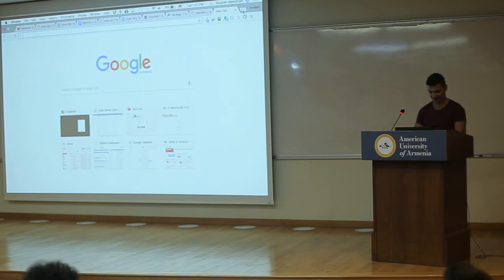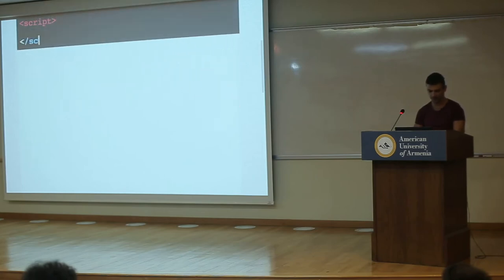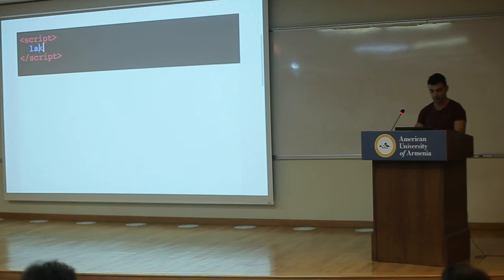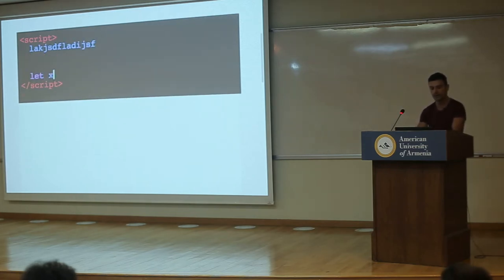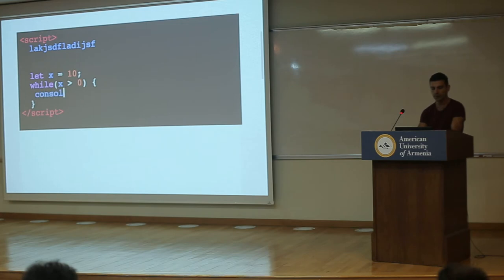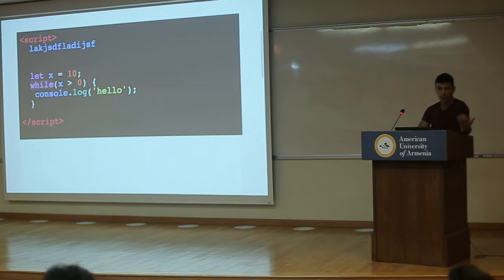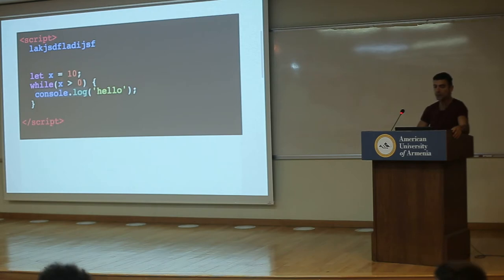Let's do this again. I'm going to make my mistake at the top so nothing runs. Let x = 10. While x is greater than 0, we do console.log 'hello'. If I let this run, this would run forever. Why? x is 10. It says: while this expression is true, execute this, go again, check, execute, go again, check, execute. And notice: x does not change, x is always 10, so it's going to run forever.